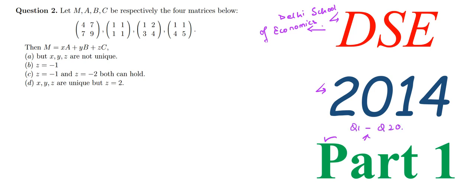We have completed question number 1 in our last video, so now we are going to start with question number 2. Question 2 says let M, A, B, C be respectively the four matrices below. As you can see, we have been given four 2x2 matrices. 2x2 matrices means 2 rows and 2 columns. Each one of these four matrices are 2x2.